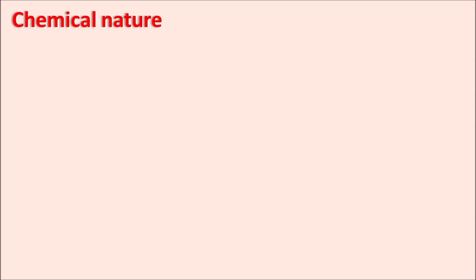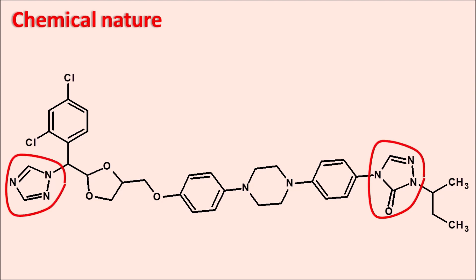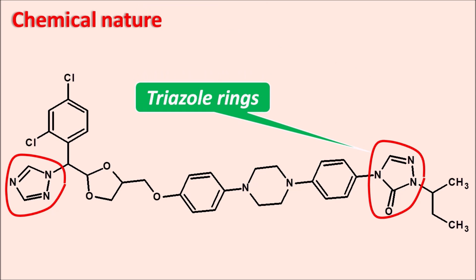First, let's look at the chemical nature of this drug. The structure of itraconazole is large, similar to ketoconazole. However, ketoconazole has imidazole rings whereas itraconazole does not — instead it has heterocyclic ring systems called triazole rings. Itraconazole has two triazole rings, and by introduction of these triazole rings the water solubility is improved, which improves the bioavailability.